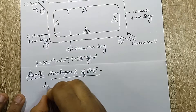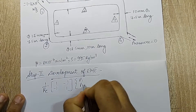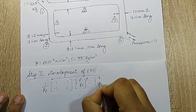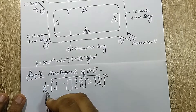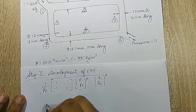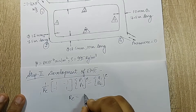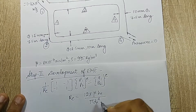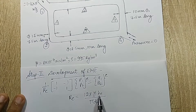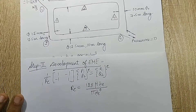Step 2 is development of the EME. The element matrix equation is (1/Rᵉ) × [1, −1; −1, 1] × {p1, p2}ᵉ = {q1, q2}ᵉ. In the previous numerical the R values were given directly, but here I use the formula: Rᵉ = 128μhᵉ / (πdᵉ⁴), where mu is dynamic viscosity, h is pipe length, and d is pipe diameter. I'll calculate R1, R2, and R3 accordingly.